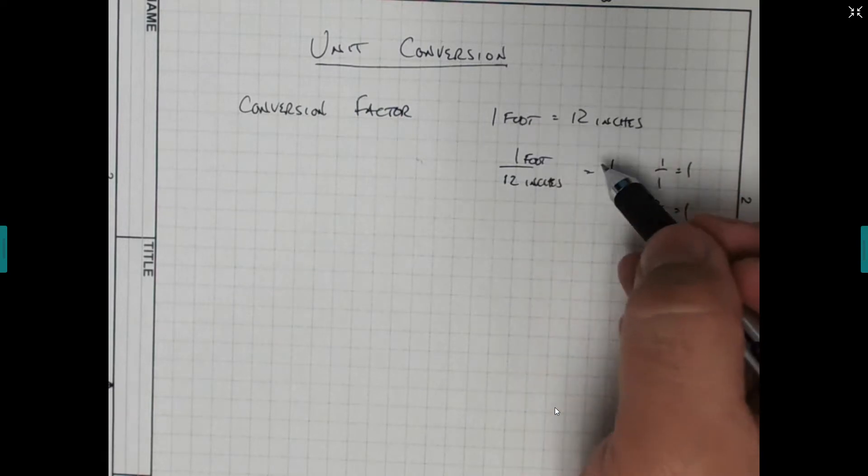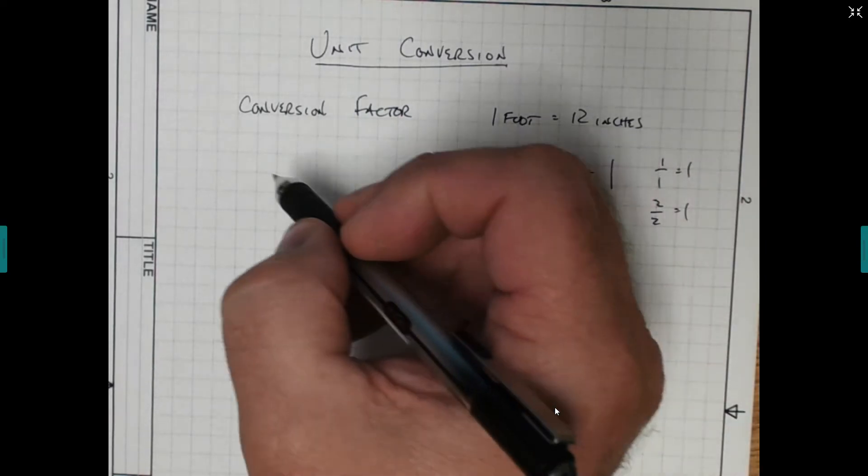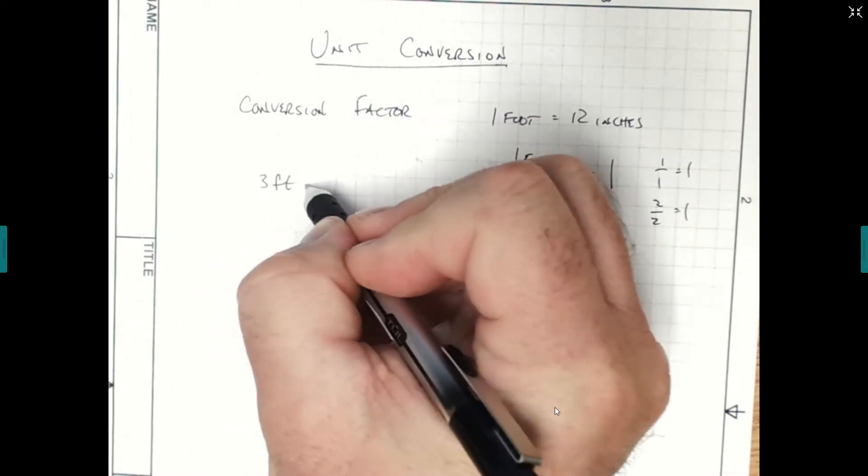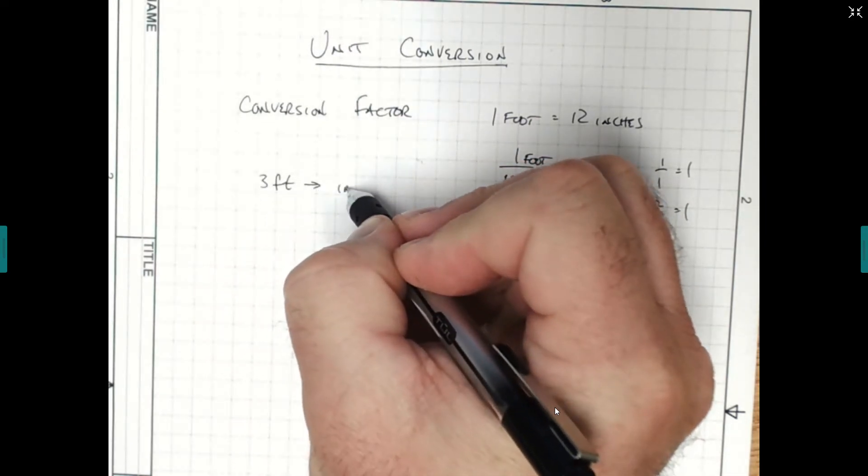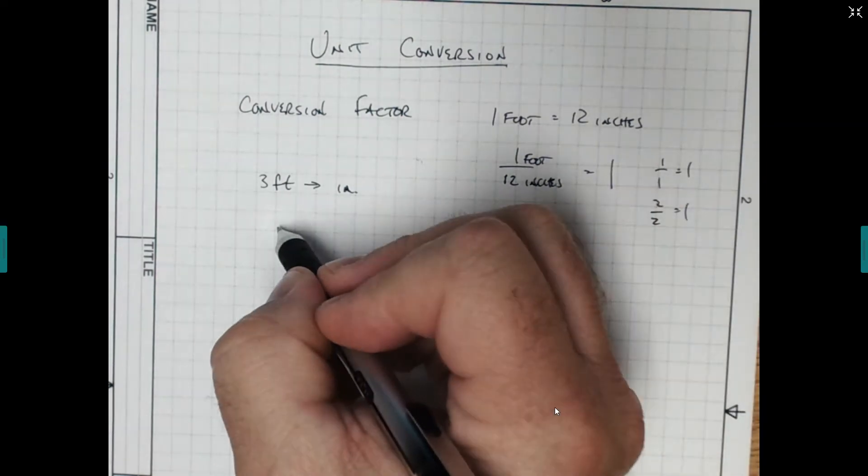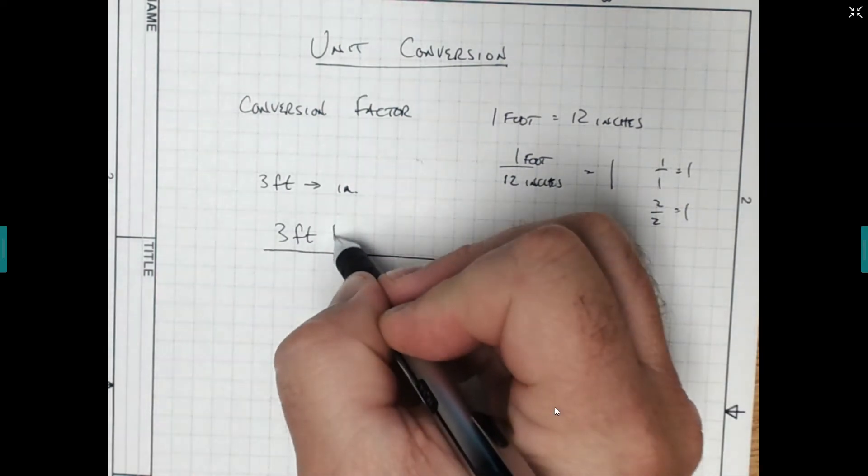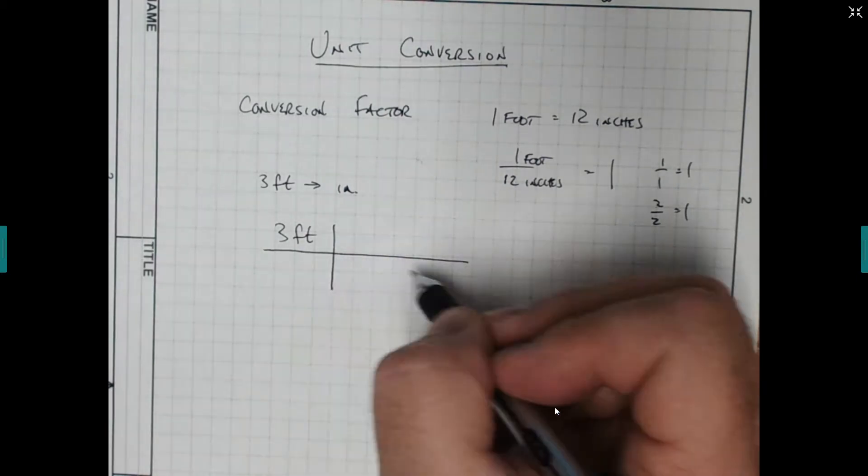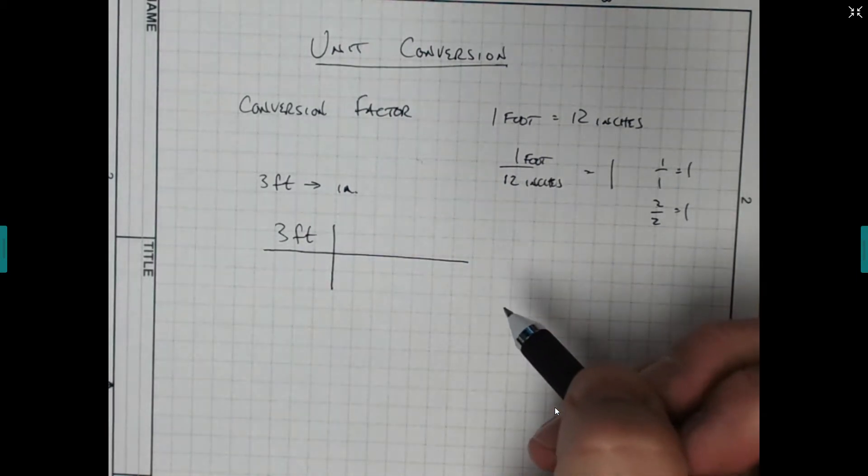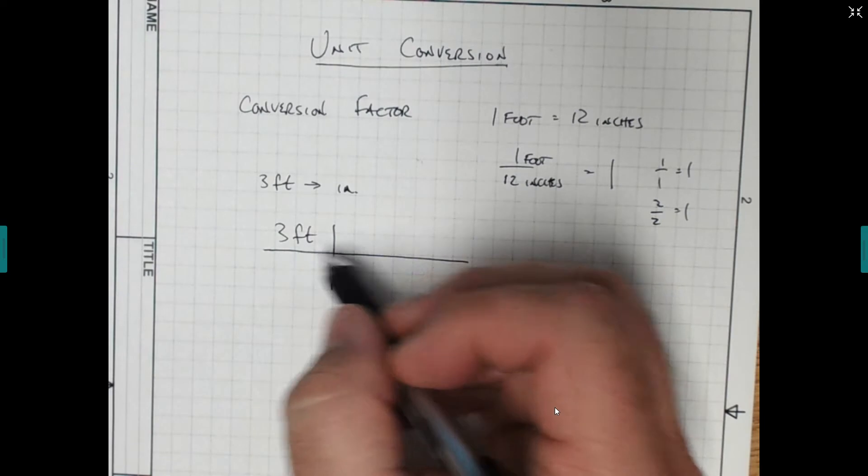So let's try an example, very simple one with feet and inches. Let's say we have 3 feet, and we want to convert that into inches. So we set up our 3 feet, and when you first start, it really helps to make this little grid, or this cross, that we make here.